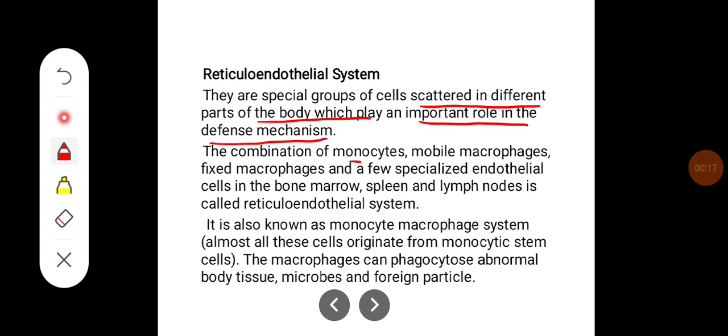The combination of monocytes, mobile macrophages, fixed macrophages and a few specialized endothelial cells in the bone marrow, spleen, and lymph nodes is called the reticuloendothelial system.